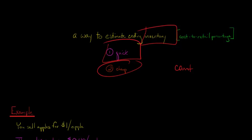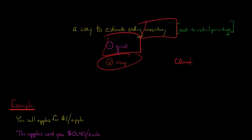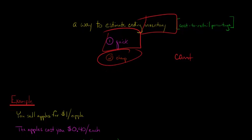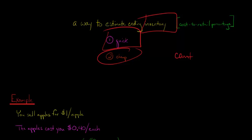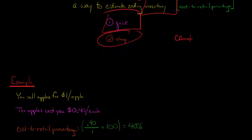So I want to give you an example and it will show you how this Cost to Retail Percentage is used to calculate ending inventory. So let's say that you have an apple stand and you sell apples for a price of $1 per apple. So you sell these apples for $1 a piece, but the apples cost you $0.40 each. So you buy them from a farmer for $0.40 and then you turn around and sell them for $1.